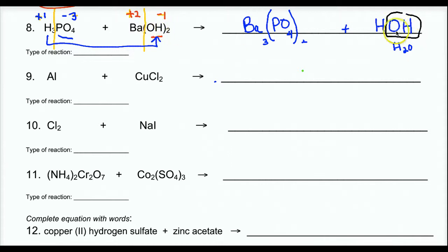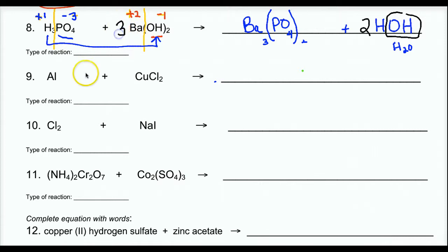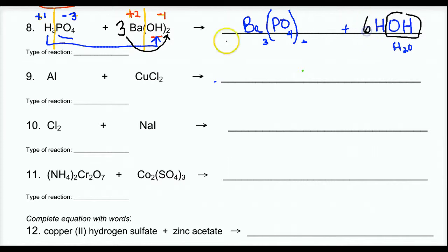I have 2 hydroxides on this side, but only 1 hydroxide on the other side. That's why I kept it HOH — so I throw a 2 there, giving me 2 hydroxides. Now I have 3 bariums here but only 1 on the other side, so I put a 3 there. But distributing the 3: 3 times 2 gives 6 hydroxides. I need 6 hydroxides. So I cross out the 2 and put in a 6.